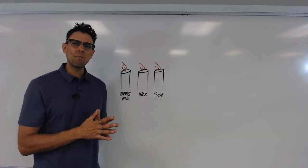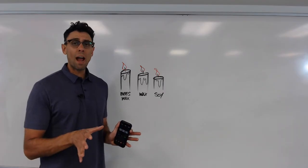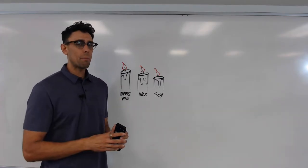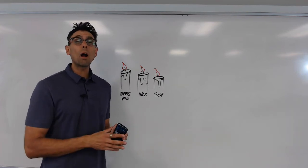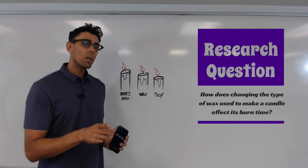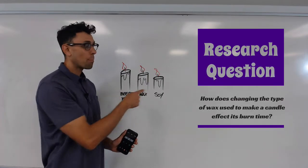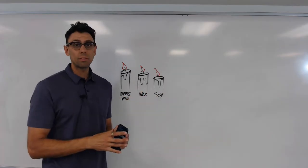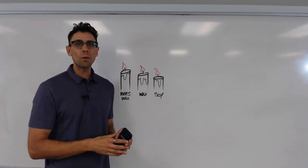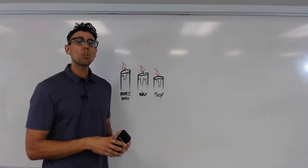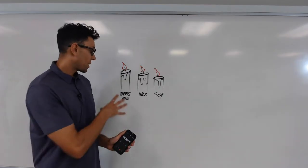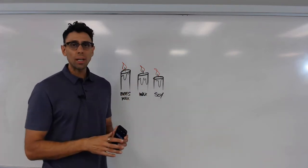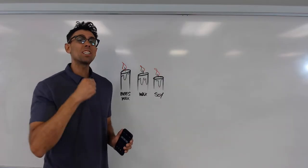So what would the dependent variable be? If our independent variable is the material we've chosen to make our candles from, what's our dependent variable? Well, let's remember our experimental question: we want to know how burn time is affected by the composition of the candles. Do candles burn faster or slower depending on what they're made of? We can see from my drawing that the beeswax candle seems to be burning much slower than the wax and the soy, so we would say that burn time is our dependent variable.